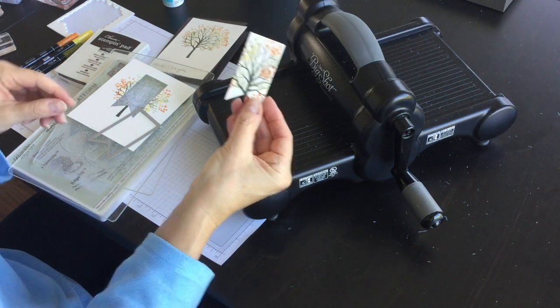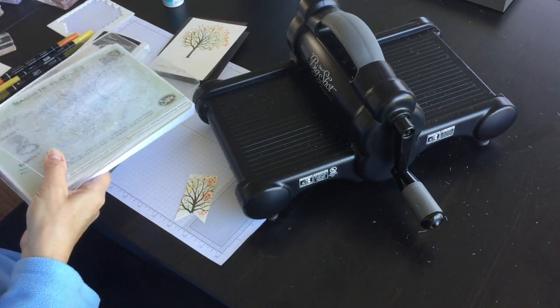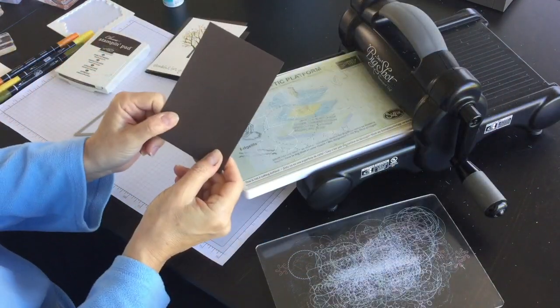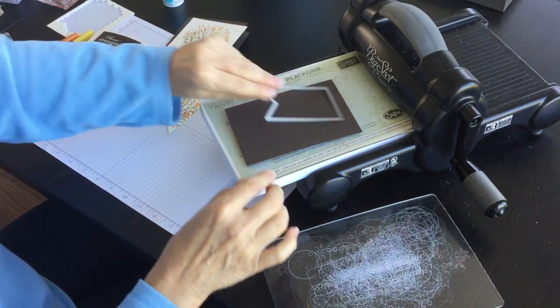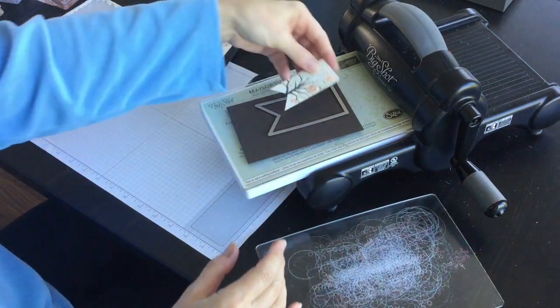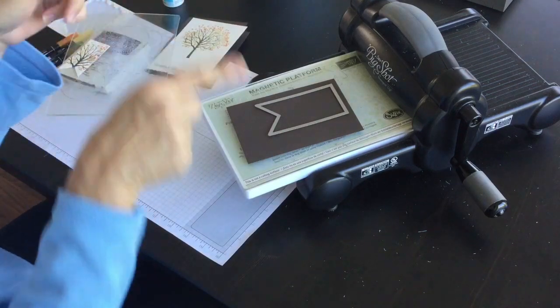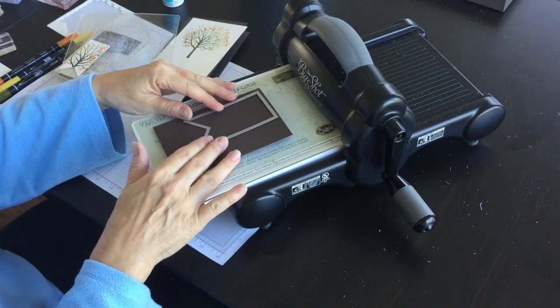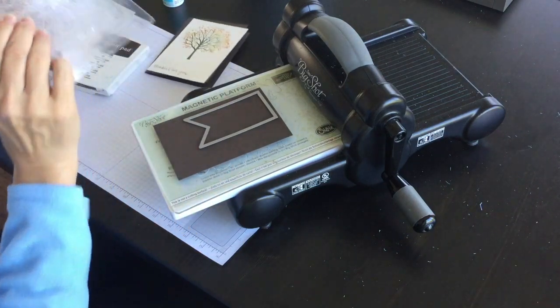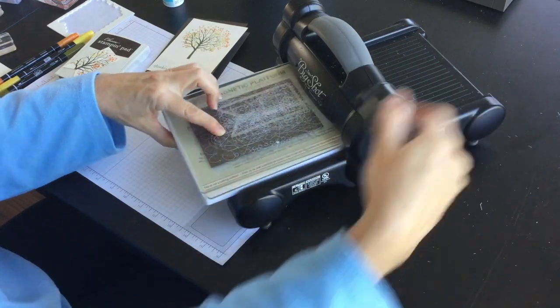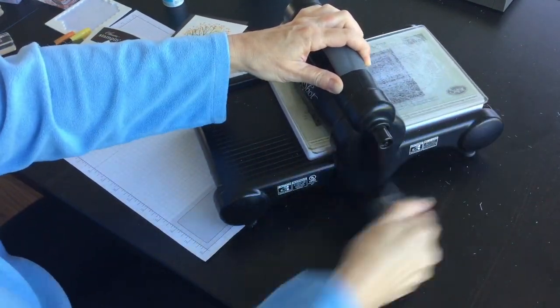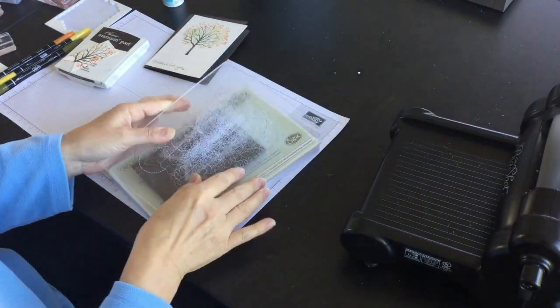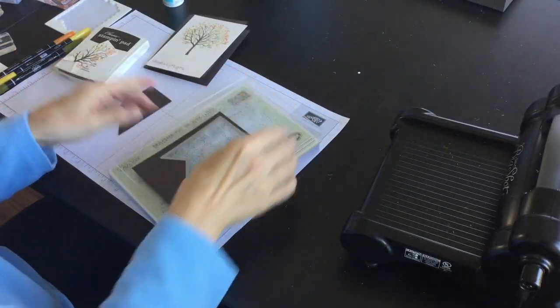So there we go, so I've got that ready to go. And then I'm going to die cut a second banner piece. For my second banner piece I'm going to use a larger framelit so it's going to be like a frame I guess around the original one that I cut out and I'm using a piece of early espresso and it's just a scrap piece so I'm going to die cut like so.